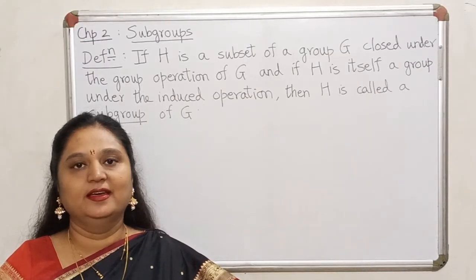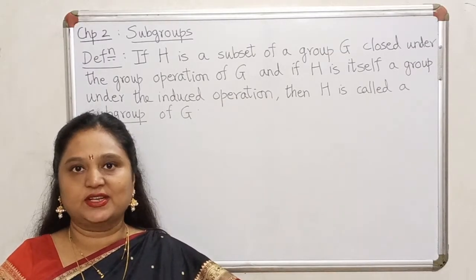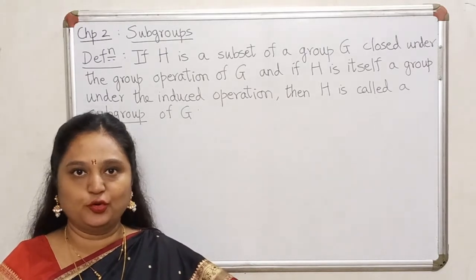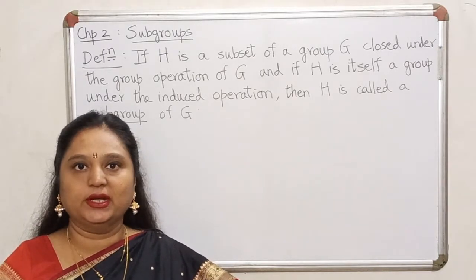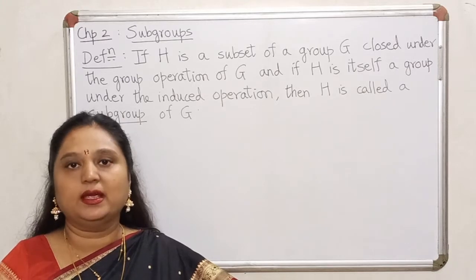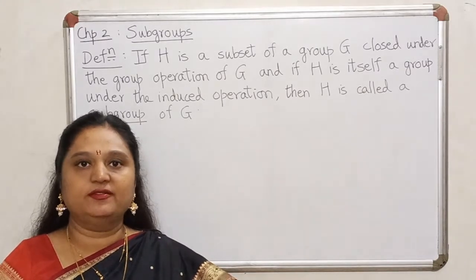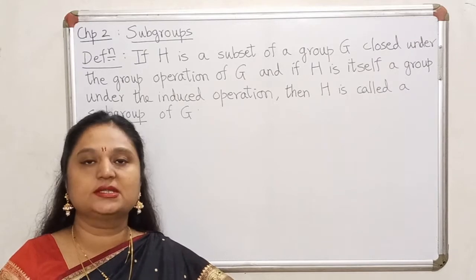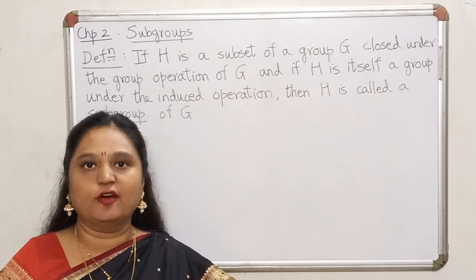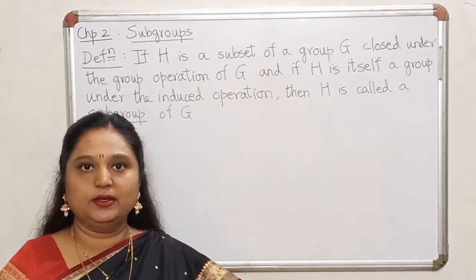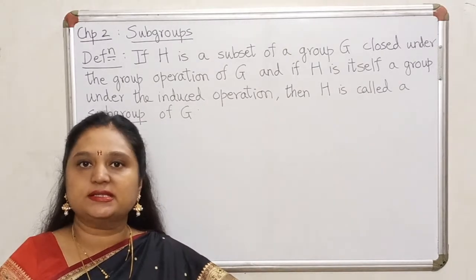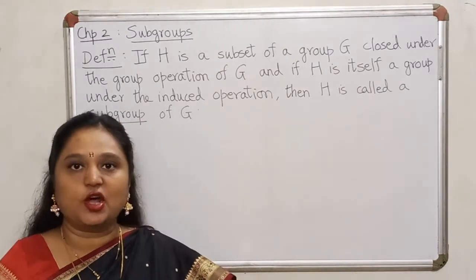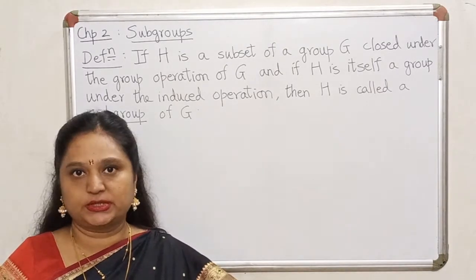Hello everyone. In the last lecture, we were looking at some properties of groups, and that was also the end of chapter 1. In chapter 1, we have seen the definition of binary operations and then the definition of a group, an abelian group. We looked at several examples of groups and also certain properties of groups.